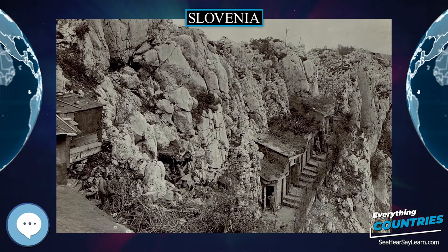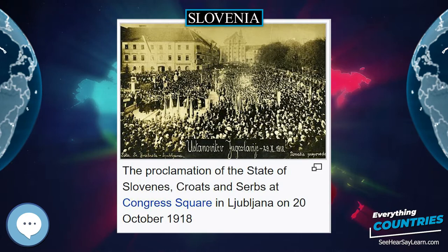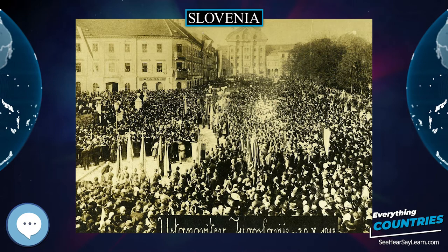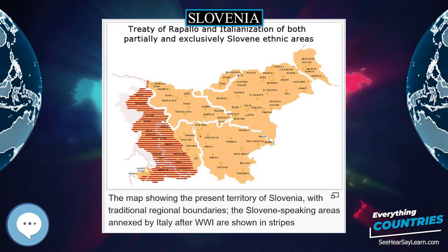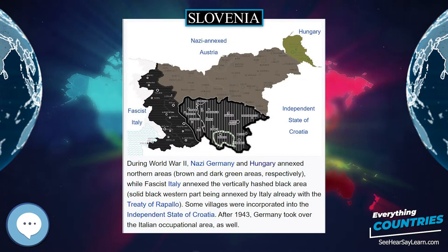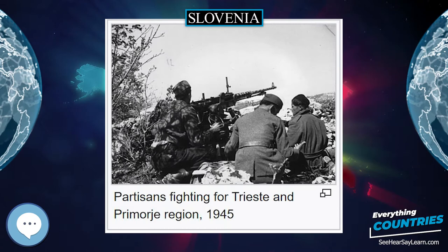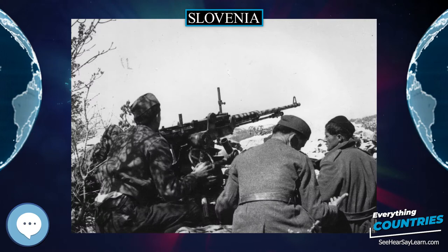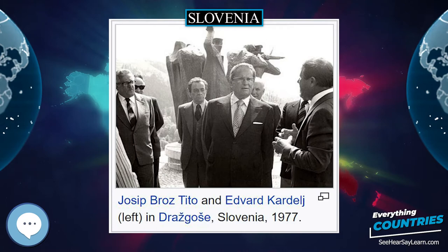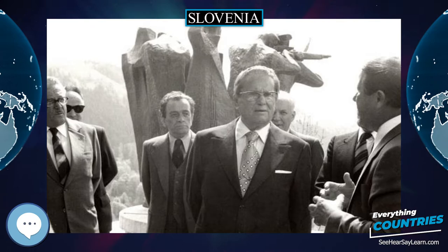Historically, the current territory of Slovenia has formed part of many different states, including the Roman Empire, Byzantine Empire, Carolingian Empire, the Holy Roman Empire, the Habsburg Monarchy, the Republic of Venice, the French-administered Illyrian Provinces of the First French Empire of Napoleon the First, the Austrian Empire, and Austro-Hungarian Empire. In October 1918, the Slovenes exercised self-determination for the first time by co-founding the State of Slovenes, Croats and Serbs. In December 1918 they merged with the Kingdom of Serbia into the Kingdom of Serbs, Croats and Slovenes, renamed the Kingdom of Yugoslavia in 1929. During World War II, 1939 to 1945, Germany, Italy, and Hungary occupied and annexed Slovenia.